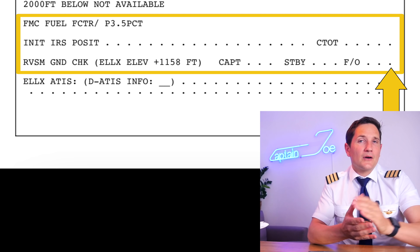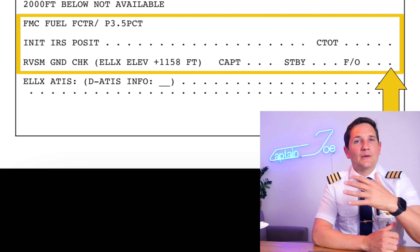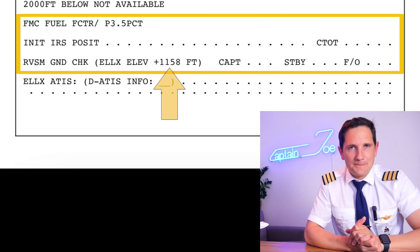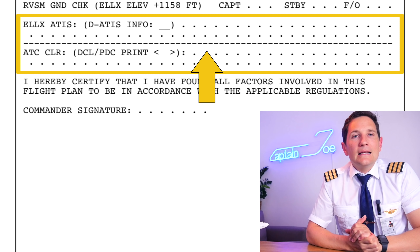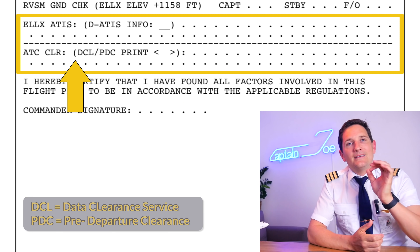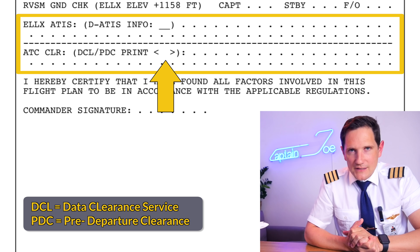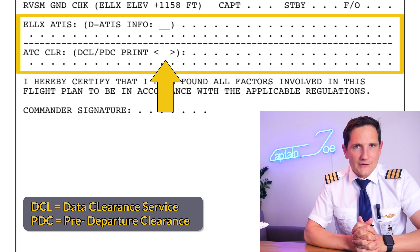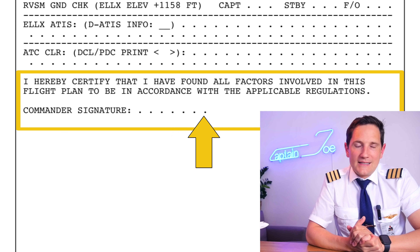You need to note these prior to every pushback and check that they are within limits — that's why the airport elevation is listed right next to it. Then there's space to write down the departure ATIS and departure clearance. The DCL or PDC box is there to write down the received PDC number from your printout. And then finally, the signature line for the operating captain.